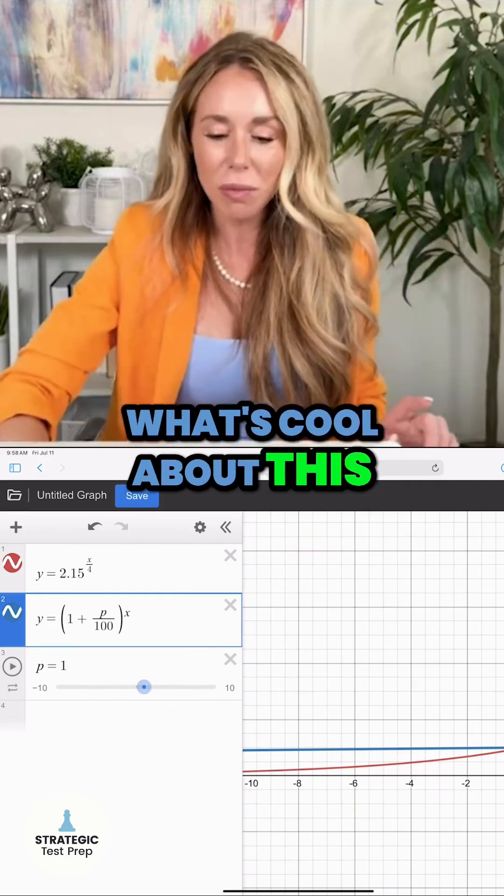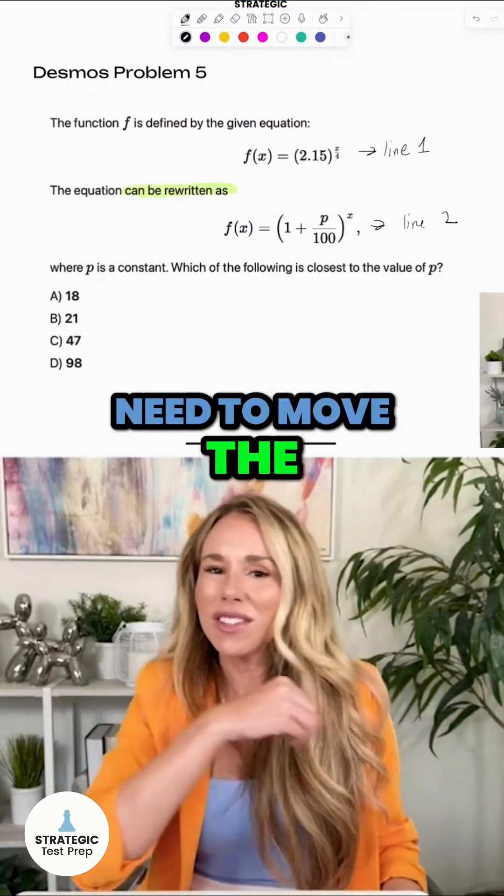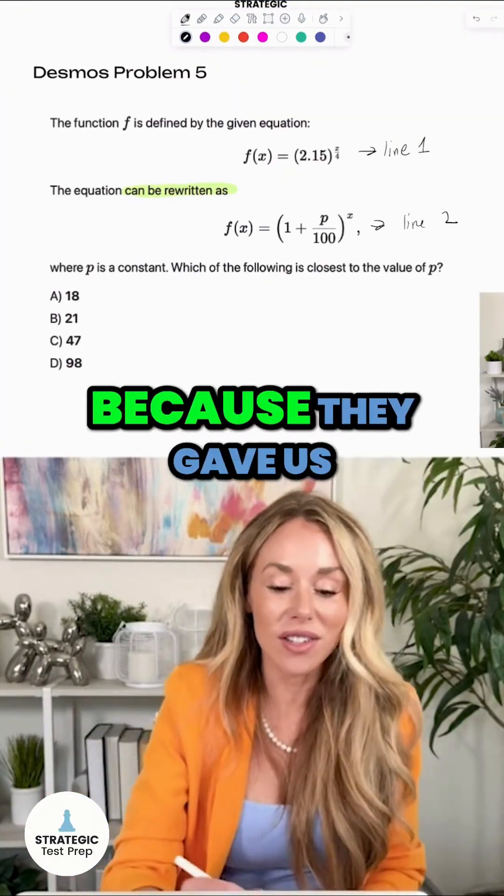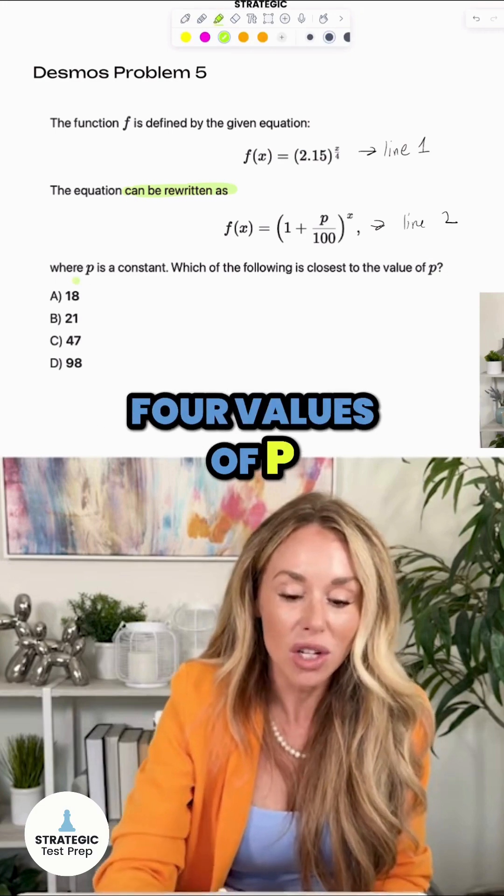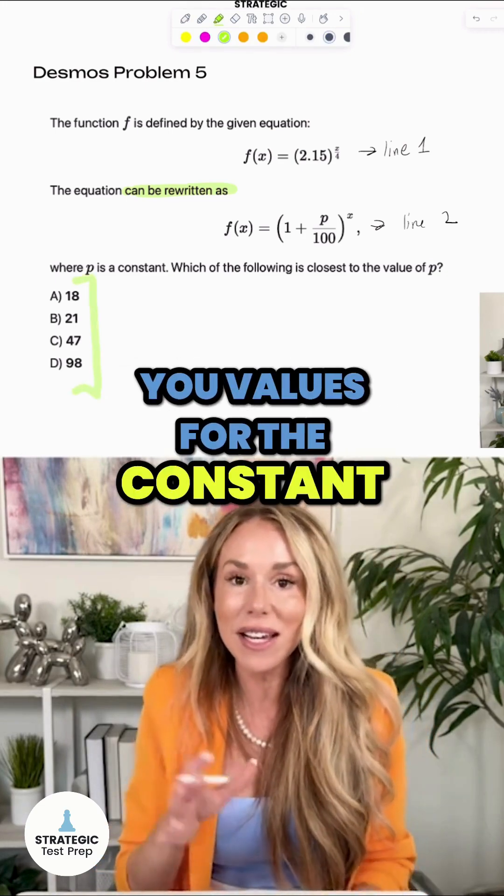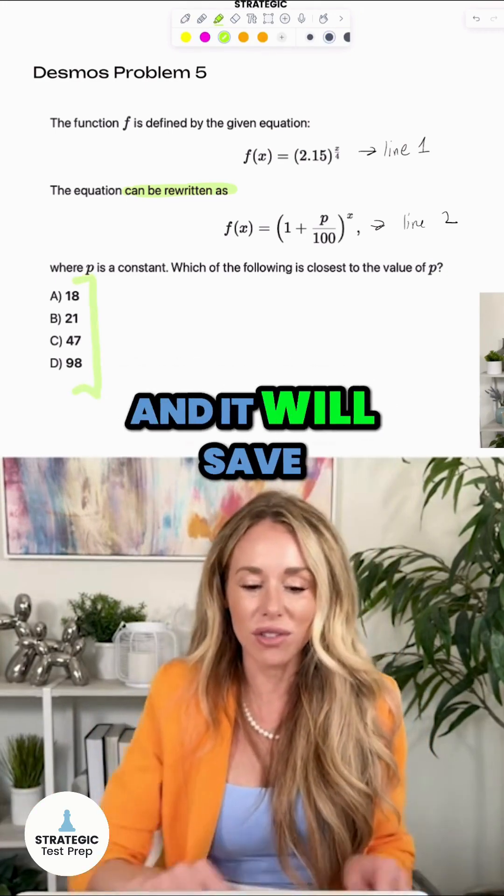Now what's cool about this problem is we don't need to move the slider P around to get it to work because they gave us four values of P. So when they give you values for the constant, just type in each one and it will save you some time.